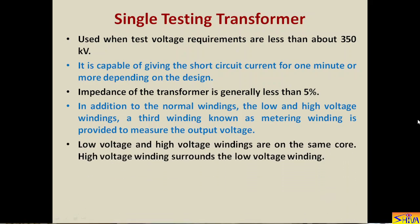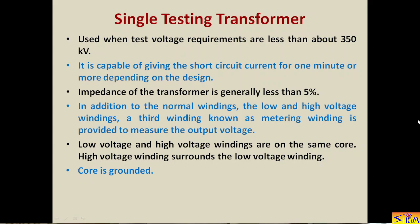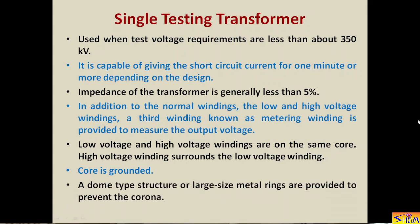The low voltage and high voltage windings are on the same core, with the high voltage winding surrounding the low voltage winding — I will show this by diagram. The core of this high voltage testing transformer is grounded — I will also show this with a diagram. Finally, a dome-type structure or large-size metal cap and metal rings are provided to prevent corona — this too will be explained with a diagram.